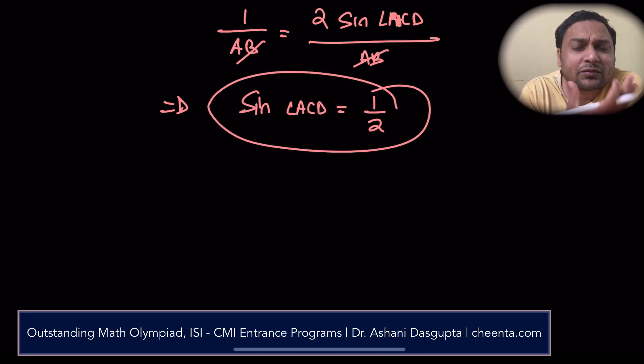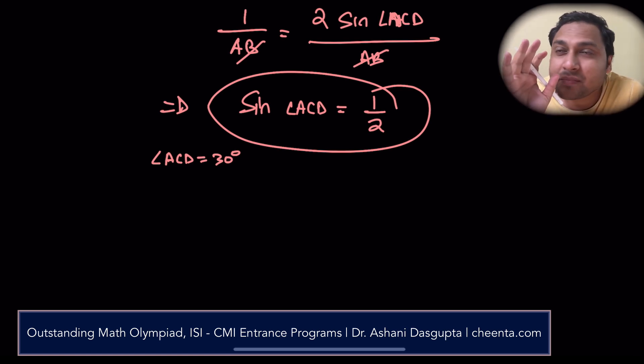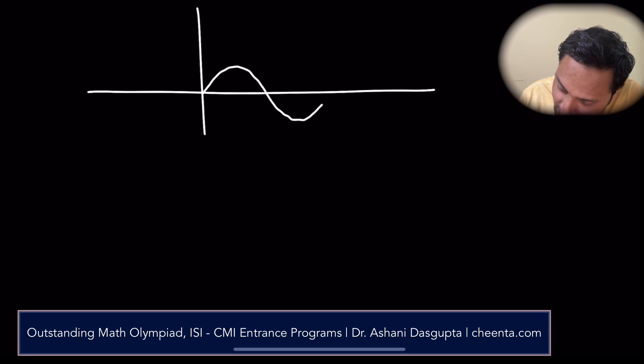So, what should be the angle then? What is angle ACD? Well, angle ACD is then 30 degrees, but we have to make the argument airtight. Like, if you look at the graph of the sine function, it's kind of like this. This is at 0 degree, this is at pi by 2 or 90 degree, and this is at pi or 180 degree.